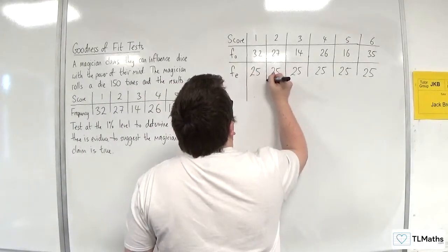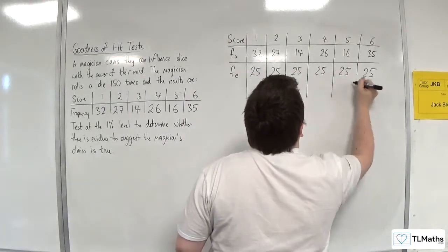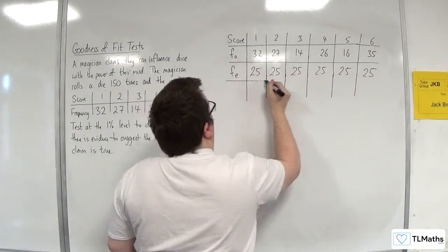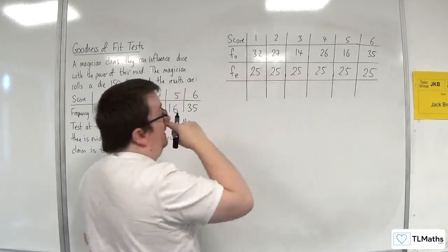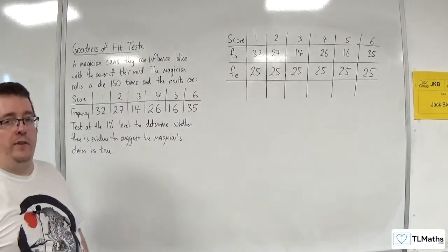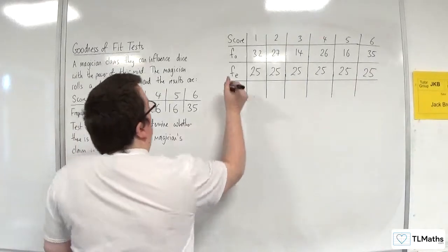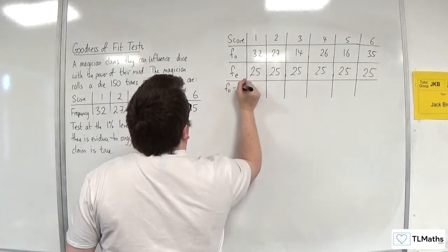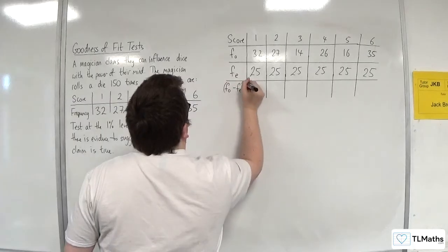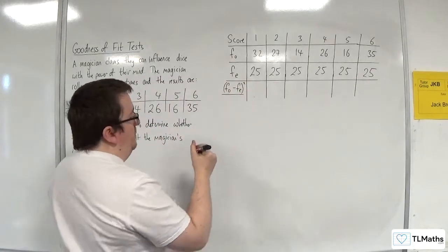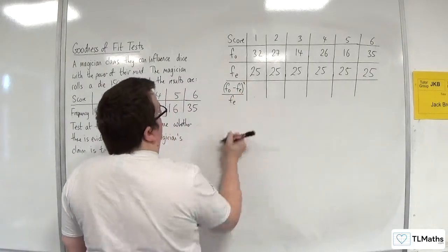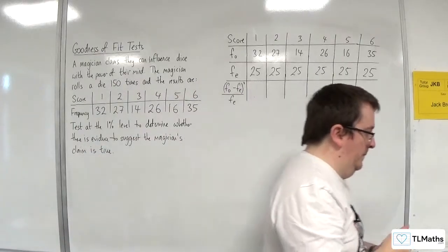Right, so then what we need to do is we need to calculate the contributions. Now, the contributions use the same formula that you used in chi-squared contingency table test. So, that would be fo, take away fe, squared, divided by fe.